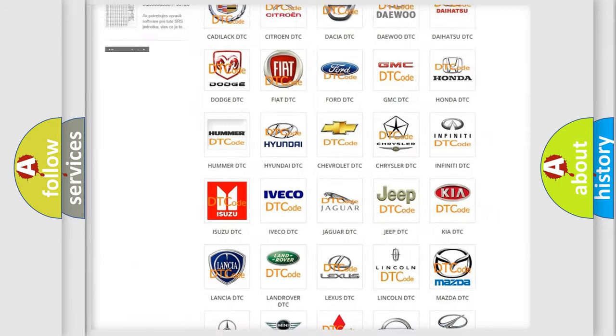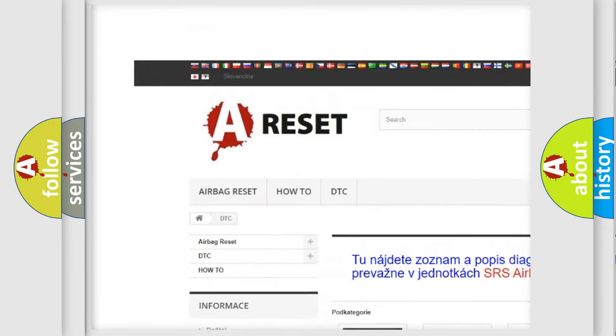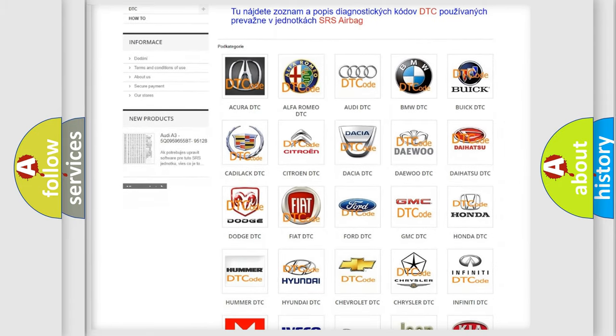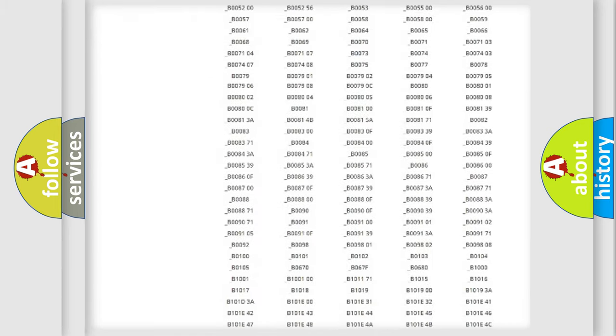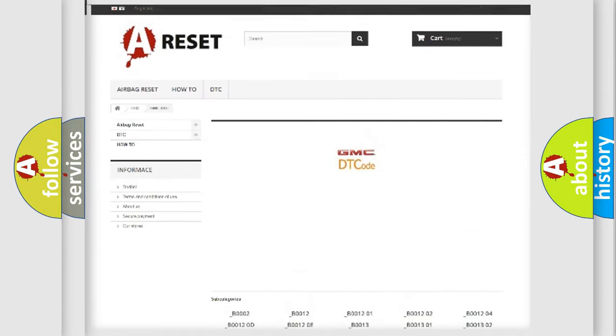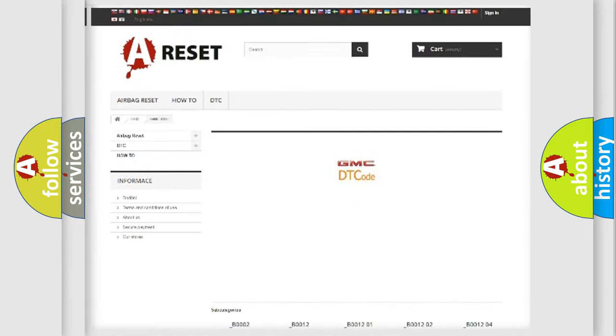Our website airbagreset.sk produces useful videos for you. You do not have to go through the OBD2 protocol anymore to know how to troubleshoot any car breakdown. You will find all the diagnostic codes that can be diagnosed in GMC vehicles, and many other useful things.